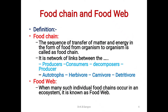Definition: one can define food chain as the sequence of transfer of matter and energy in the form of food from organism to organism. It is a network or link between producers, consumers, decomposers and again to the producers. Food from autotrophs is transferred to herbivores, and from herbivores it is eaten up by carnivore animals, and these carnivores after death are decomposed or utilized by detritivore animals.